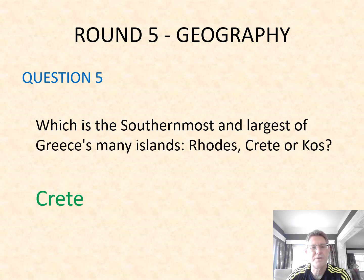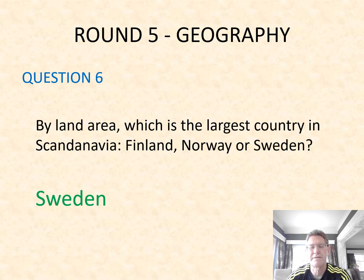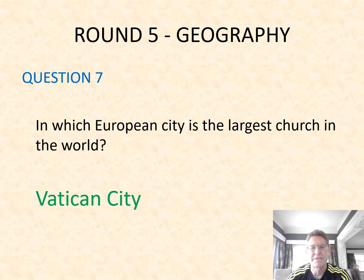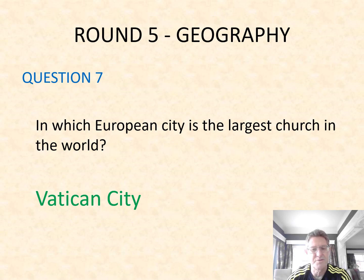Number five: which is the southernmost and largest of Greece's many islands — Rhodes, Crete or Kos? It's Crete. Number six: by land area, which is the largest country in Scandinavia — Finland, Norway or Sweden? It is in fact Sweden. Number seven: in which European city is the largest church in the world? It's the Vatican City — if you put Rome, you're wrong. It's actually Vatican City.